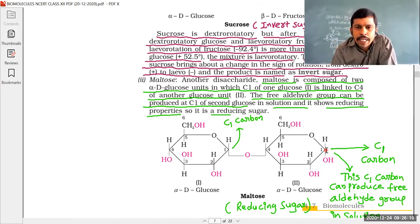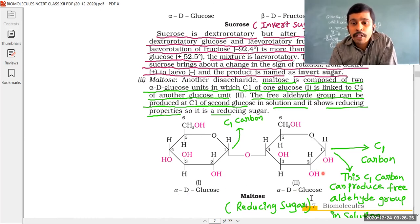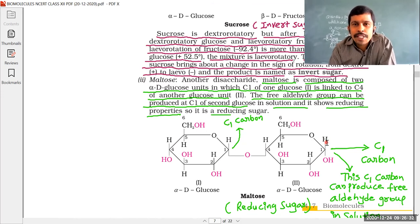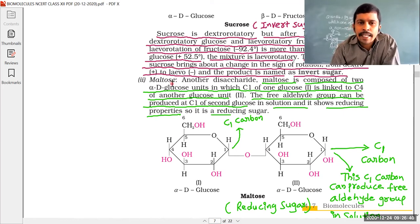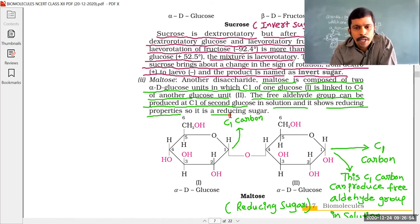When maltose undergoes hydrolysis to produce two alpha-D-glucose units, those units have hemiacetal forms that can reproduce the aldehyde group and reduce Tollens' reagent and Fehling's solution. So maltose is an example of a reducing sugar and can show mutarotation. Sucrose cannot show mutarotation and is a non-reducing sugar, whereas maltose is a reducing sugar.